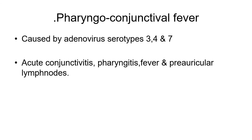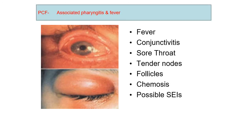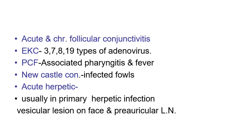Pharyngoconjunctival fever (PCF) is caused by adenovirus serotypes 3, 4, and 7. It presents with acute conjunctivitis, pharyngitis, fever, and pre-auricular lymph nodes. Pictures show chemotic conjunctiva, lid edema, fever, sore throat, tender lymph nodes, follicles, and possible sub-epithelial infiltrates on the cornea. Epidemic keratoconjunctivitis can be caused by adenovirus serotypes 3, 7, 8, and 19; pharyngoconjunctival fever is associated with pharyngitis and fever.